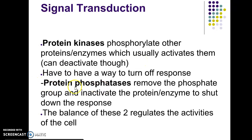The second important protein is a protein phosphatase. A phosphatase — it's pretty much in the name — it removes the phosphate group and inactivates a protein or enzyme to shut it down. The balance of these two regulates the activities of the cell. The activity of a protein regulated by phosphorylation will depend on the balance in the cell between an active kinase and an active phosphatase.